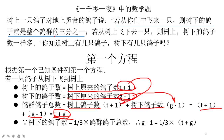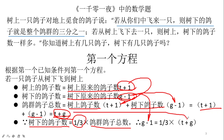从地面飞到树上飞了一只鸽子过去之后，地面上的鸽子数量就是整个鸽群数量的三分之一。也就是说，地面上的鸽子数量等于鸽群总数乘以三分之一。地面上的鸽子数量是G-1，鸽群总数是T+G，所以：(T+G)×(1/3) = G-1。这就是题目的第一个方程。